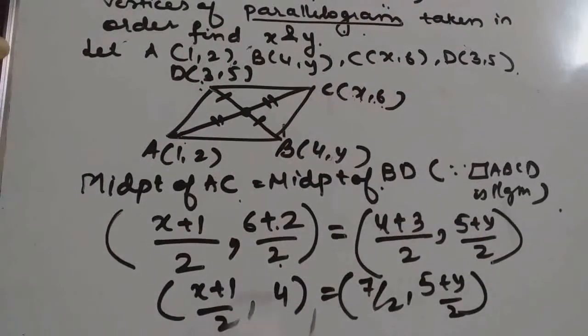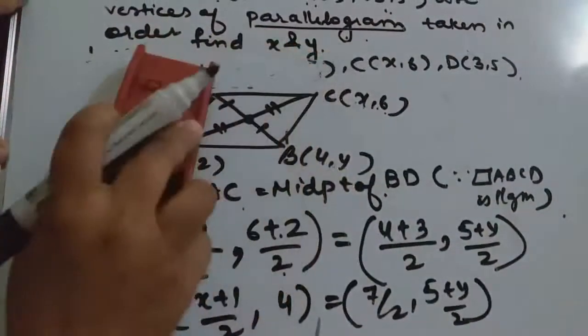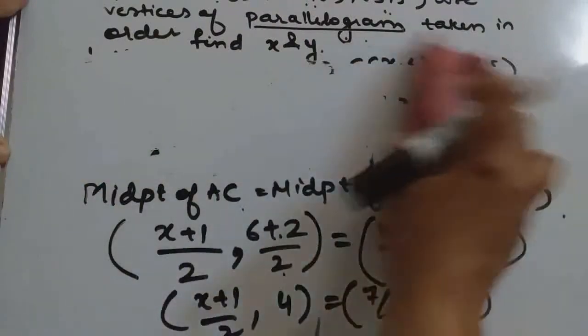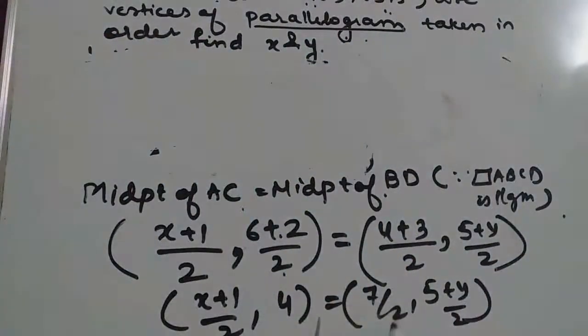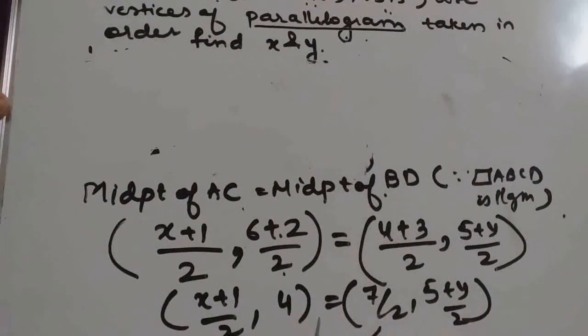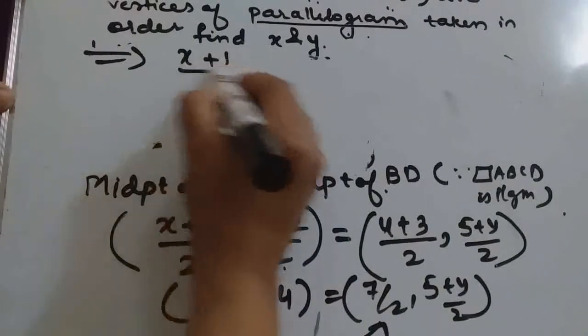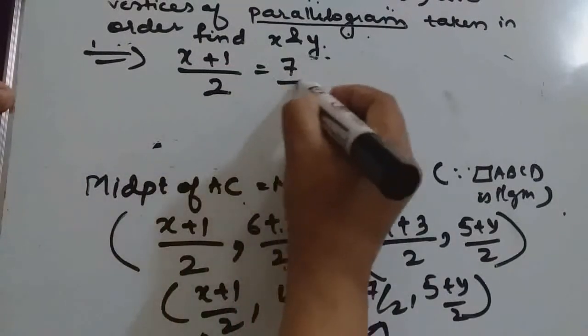Now, these two points are equal. Points can be equal when corresponding coordinates are equal. That means if these two points are equal, the x coordinate of both points must be equal. So here we can equate: (x + 1)/2 equals 7/2.